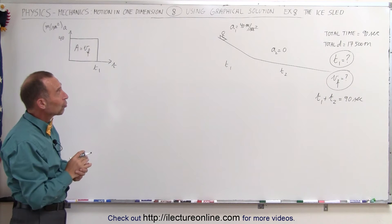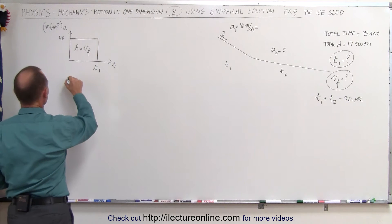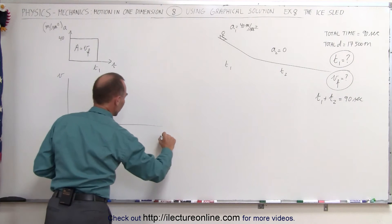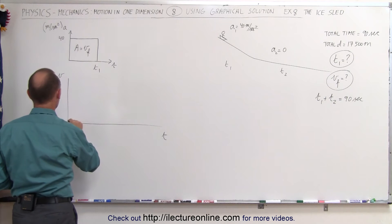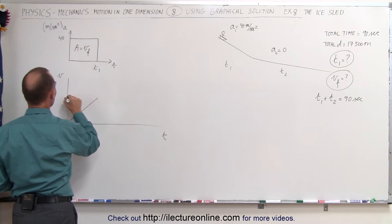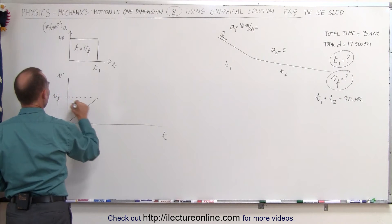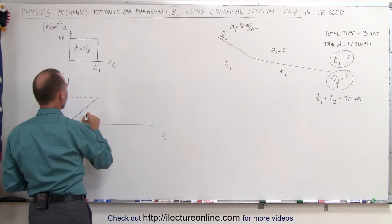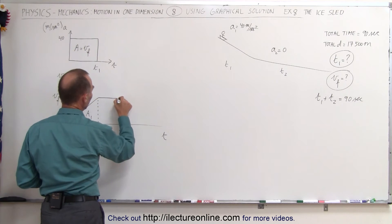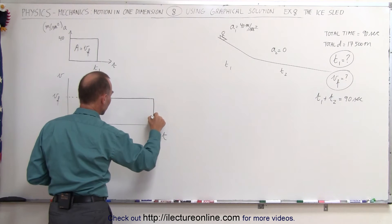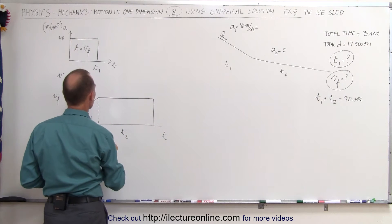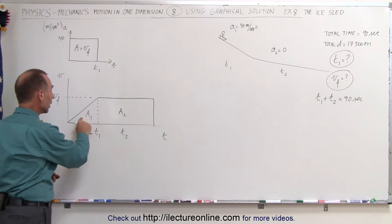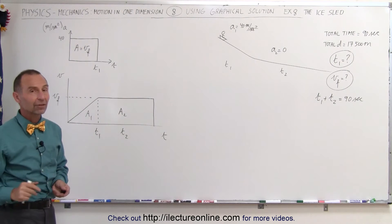The second graph we're going to draw is the velocity versus time graph. For the first t1 period, the velocity increases until we reach the maximum velocity, v_final, which is reached after time t1 has elapsed. We'll call this area A1. Then we continue for another period t2 until we reach the end of the trip — this is area 2. Area 1 plus area 2 together must add up to the 17,500 meters.